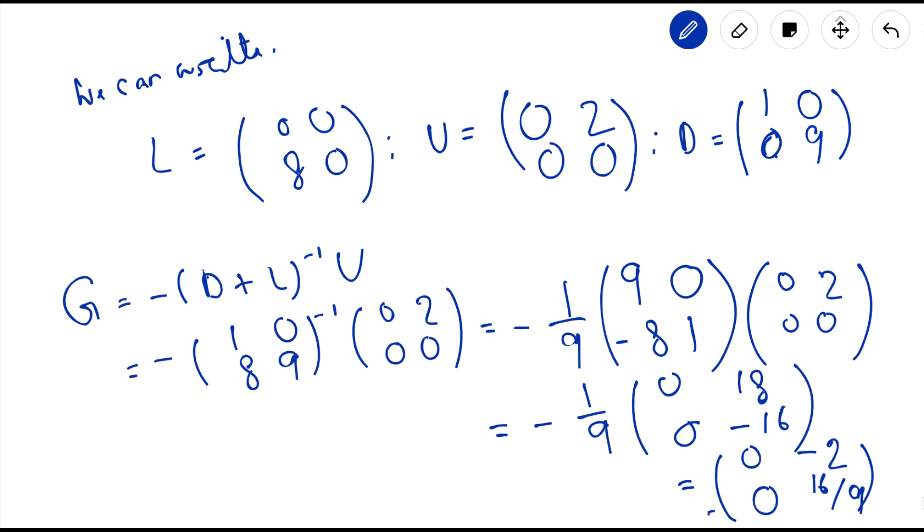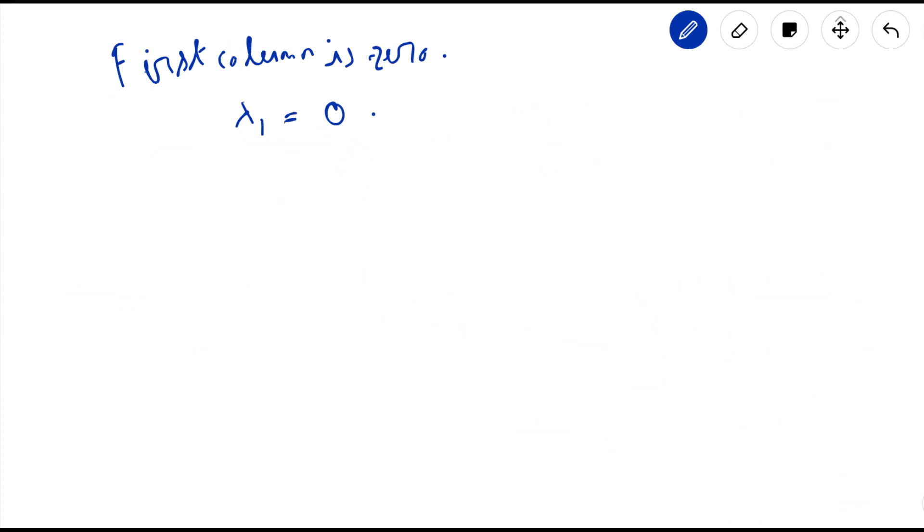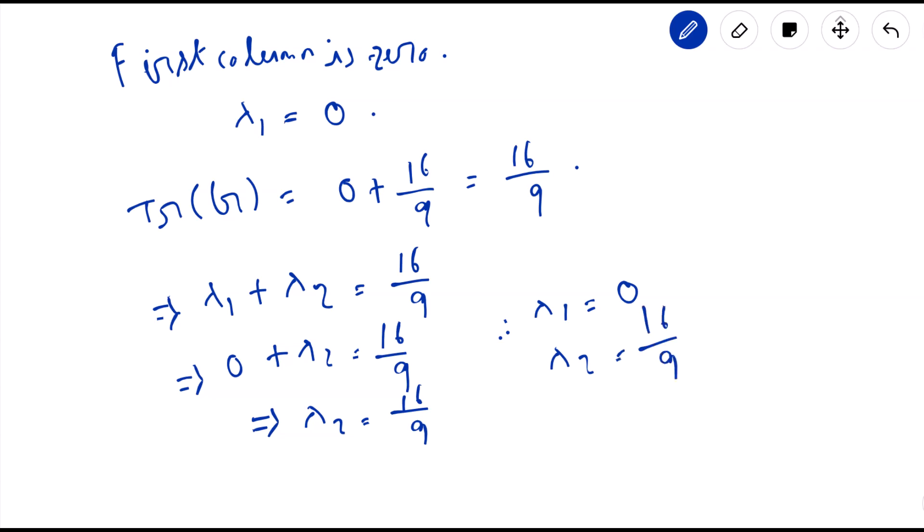Here we can see the first column is all zeros, so one eigenvalue is 0. We can see the diagonal elements are 0 and 16 by 9, so lambda 2 is 16 by 9. Therefore lambda 1 is 0 and lambda 2 is 16 by 9.